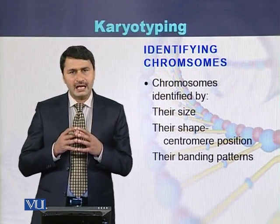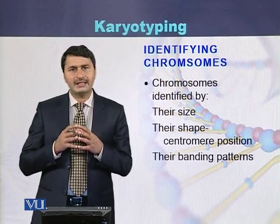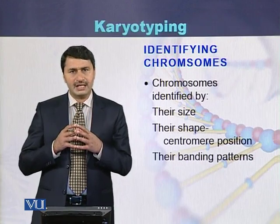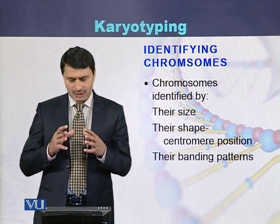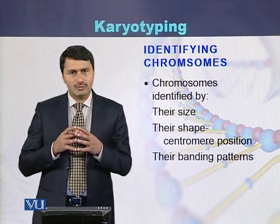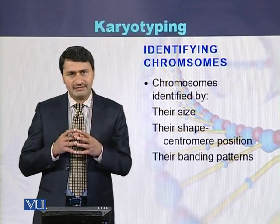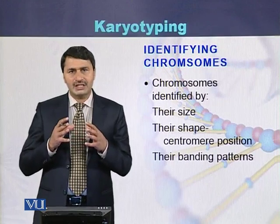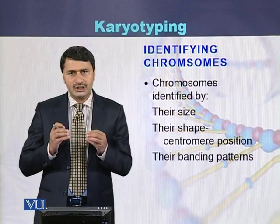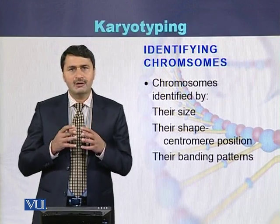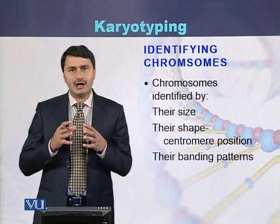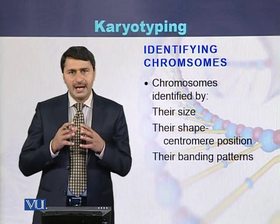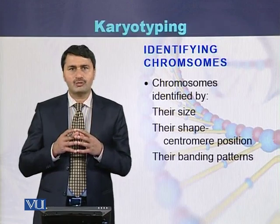Chromosomes can be identified by three different ways: based on their size, based on their shape — where shape refers to the position of the centromere — and based on the banding patterns of the chromosomes.